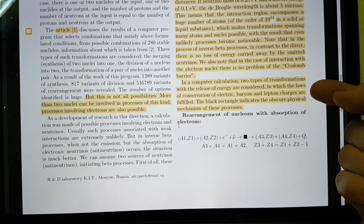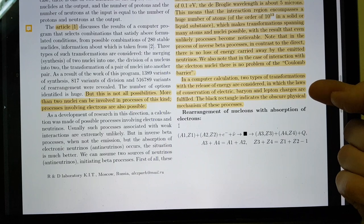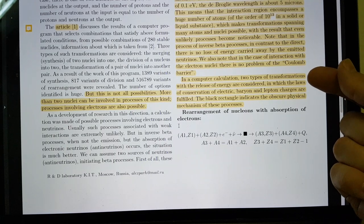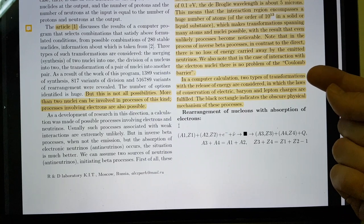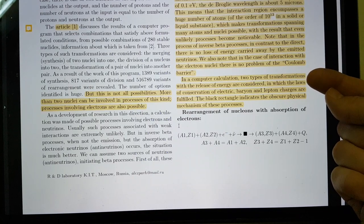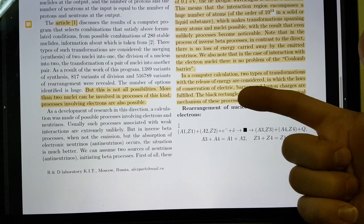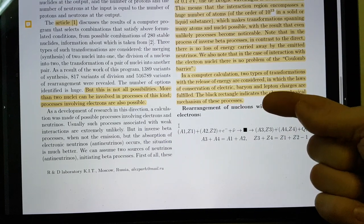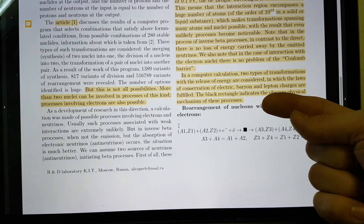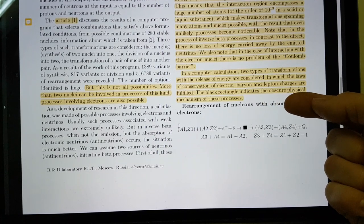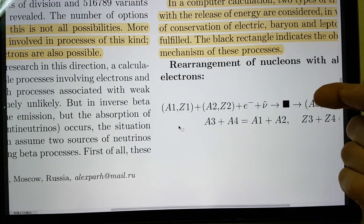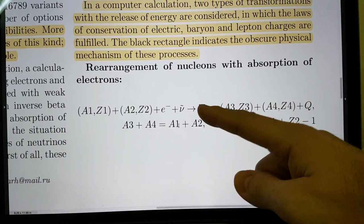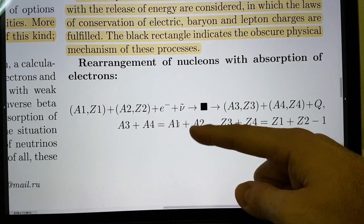In computer calculation, two types of transformations with the release of energy are considered. He's, again, only looking at those net positive reactions, either emit an electron or absorb an electron, in which the laws of conservation of electric, baryon and lepton charges are fulfilled. The black rectangle indicates the obscure physical mechanism of these processes. Again, he is not concerned with what is going on in the black box.